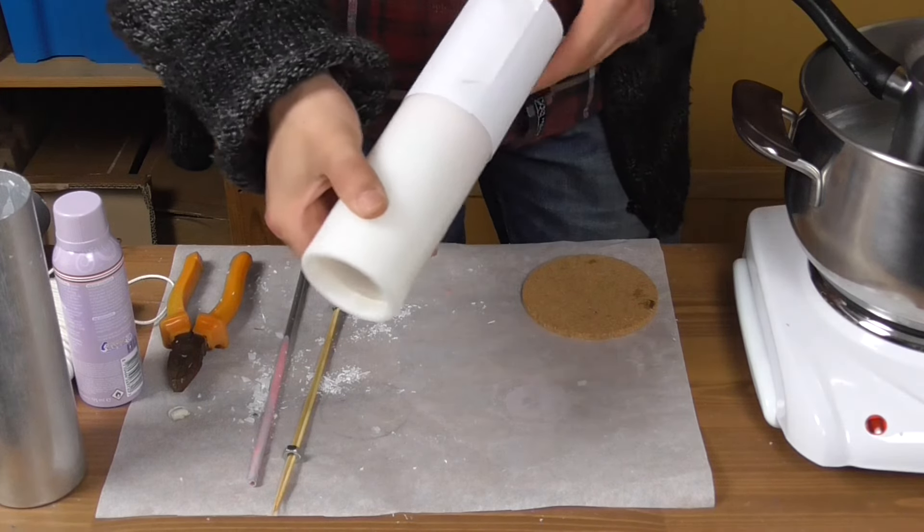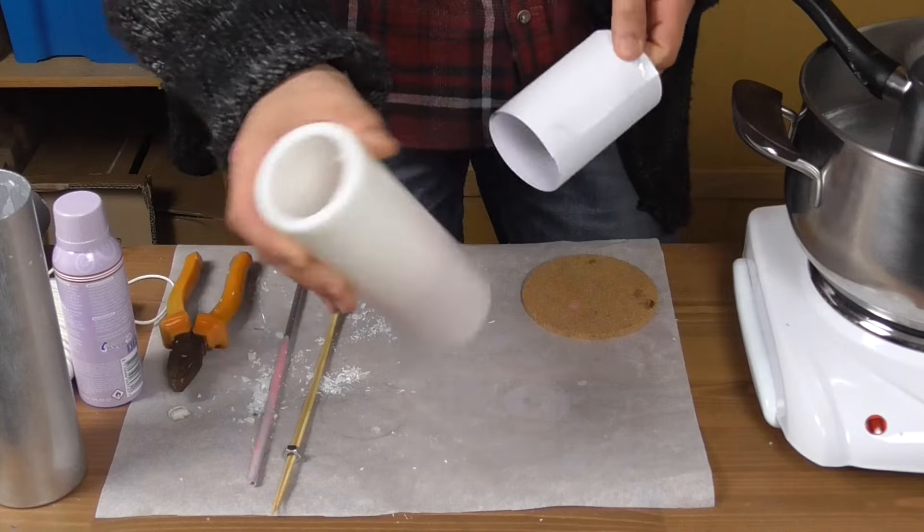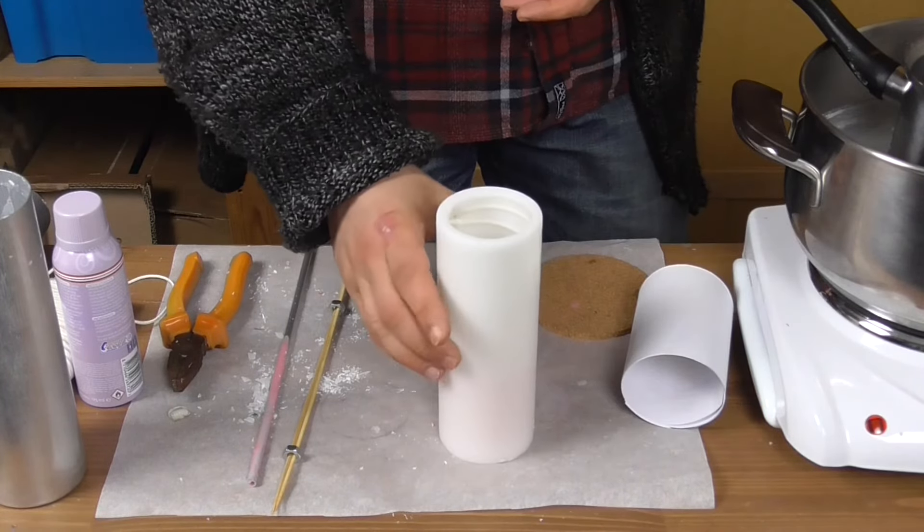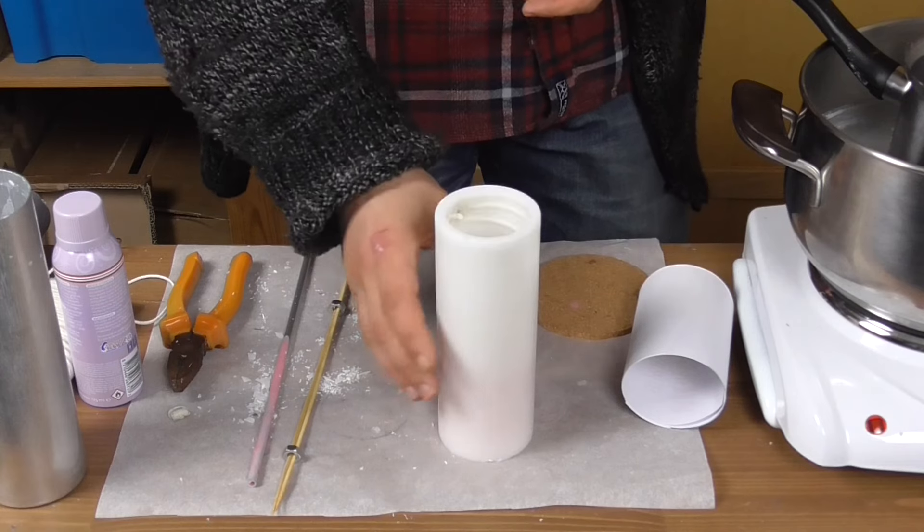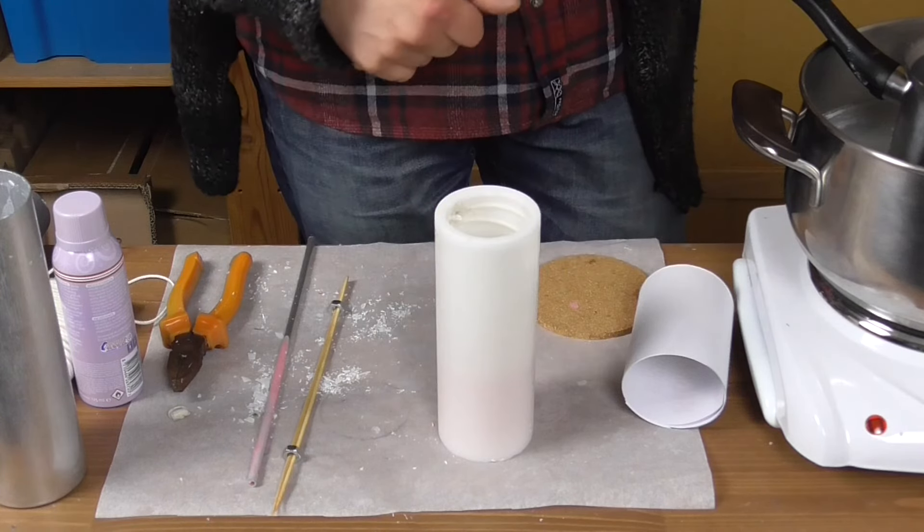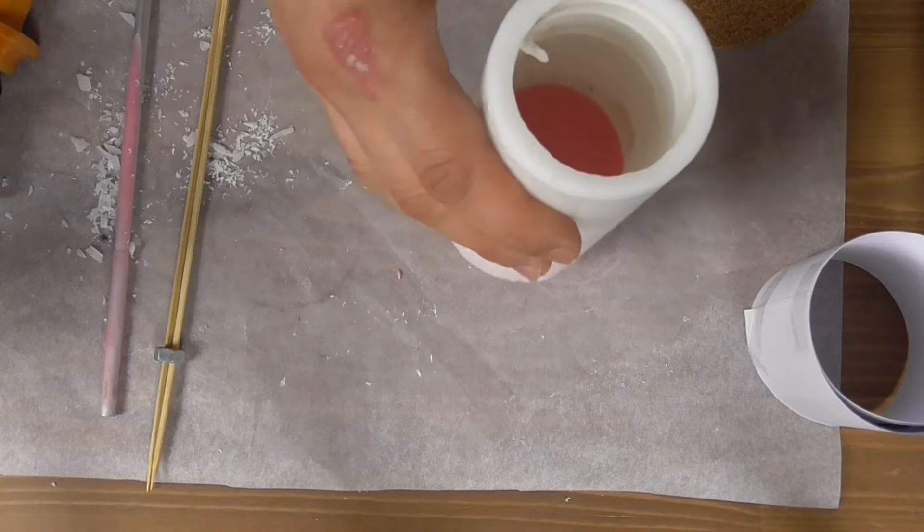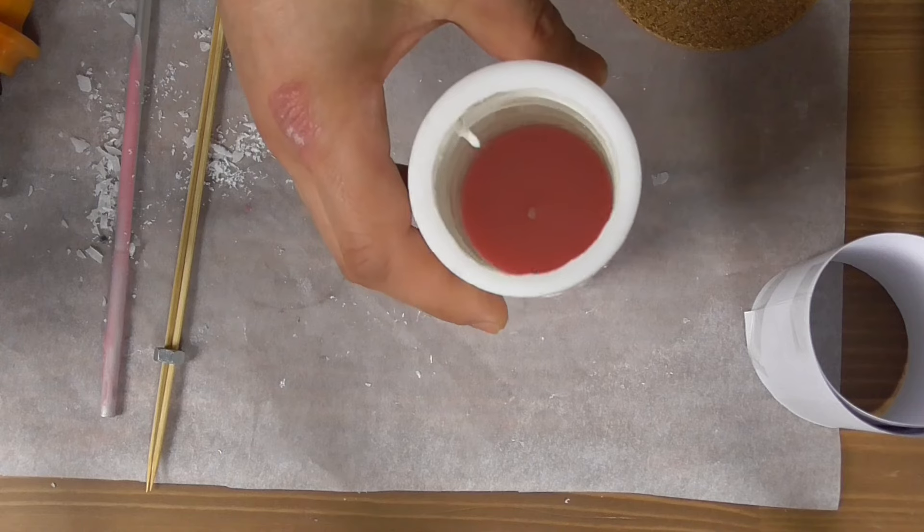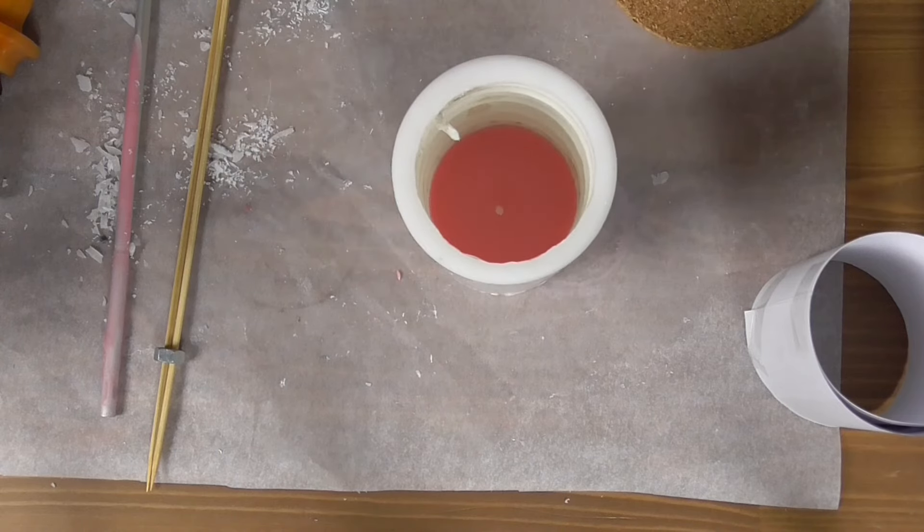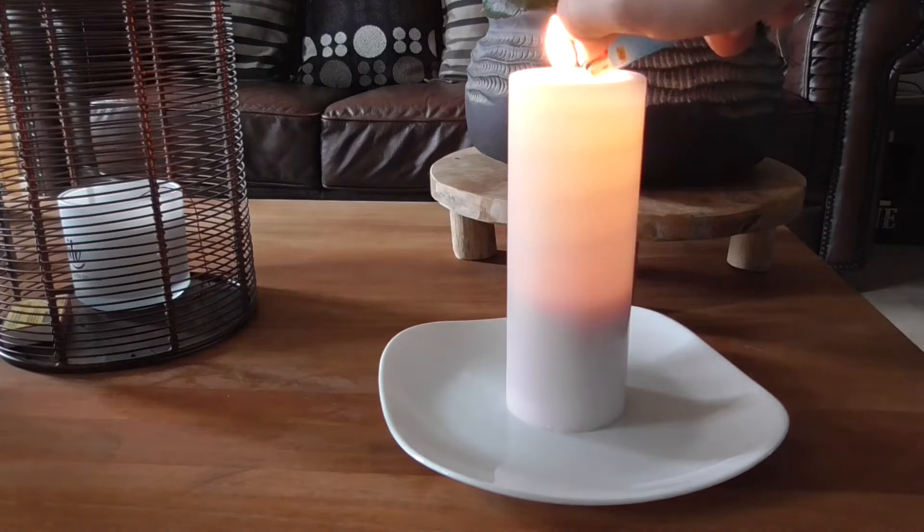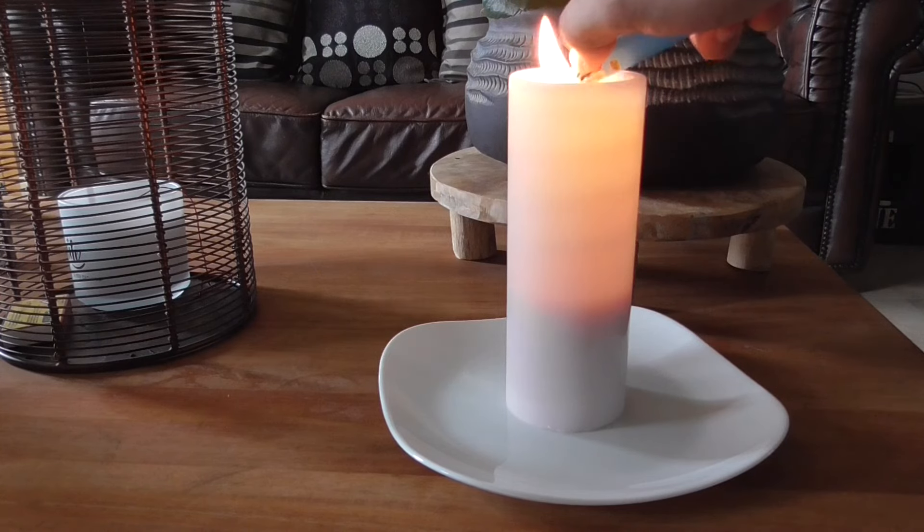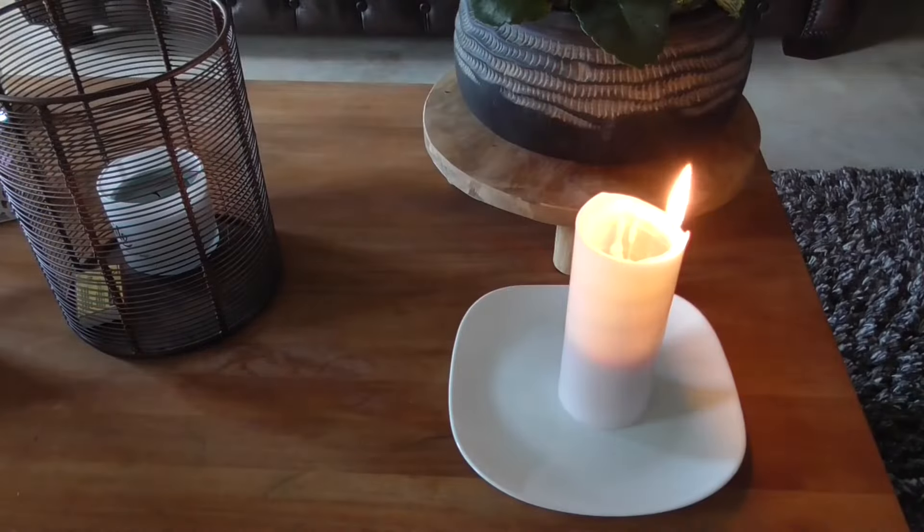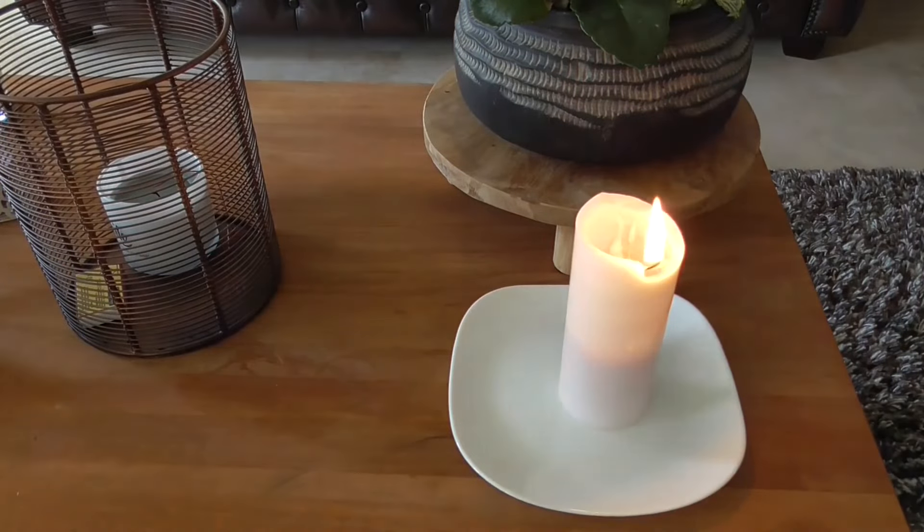Perfect. And when the wax is set, you can remove the paper sleeve. And there you go, your spiral candle is done. Now all you have to do is light it and watch it burn.